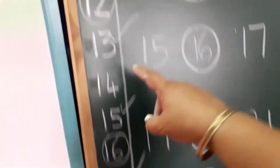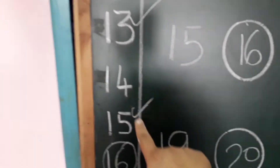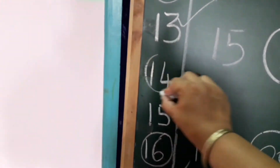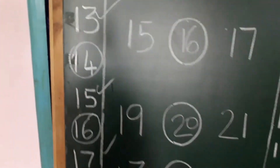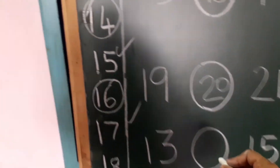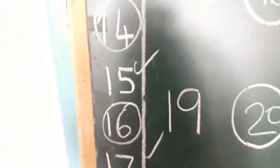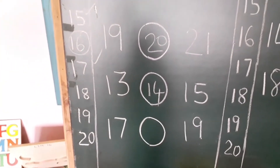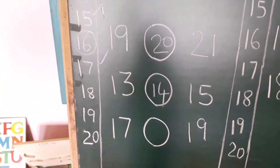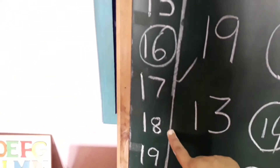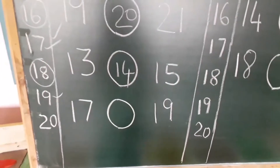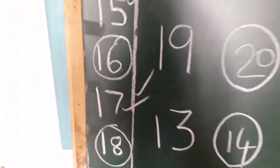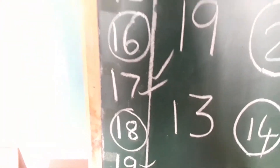13 dash 15. Which number is between 13 and 15? 14. Yes, so write here 14. Next: 17 dash 19. So 17 aur 19 ke beech mein kaunsa number aata hai? 18. So you write here 18.